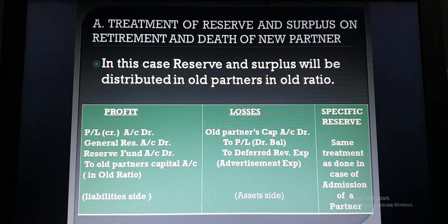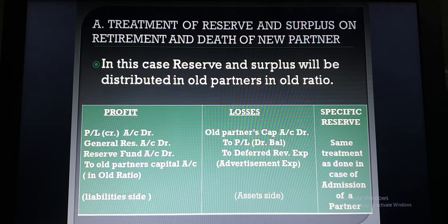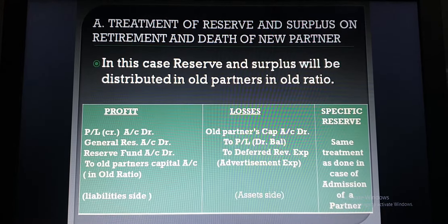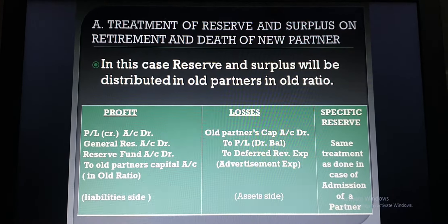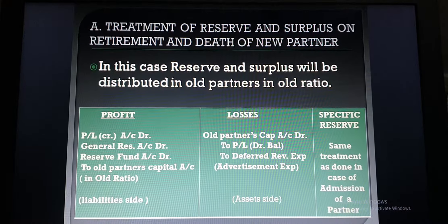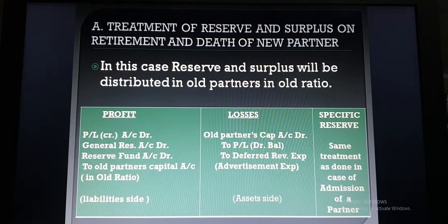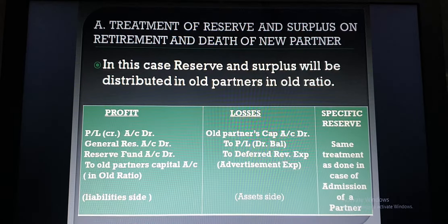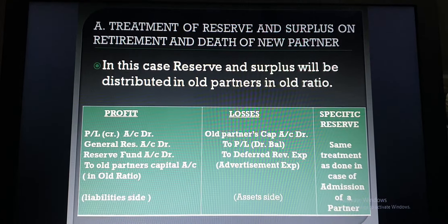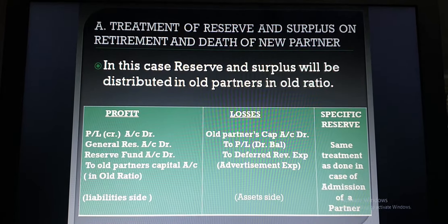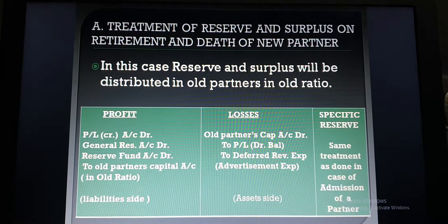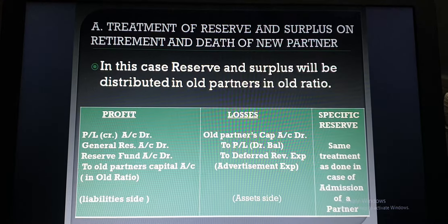All the profit will be distributed among old partners in old ratio, and generally these profits are given on the liability side of the balance sheet. In case of losses, old partners' capital accounts will be debited. There are two types of losses: P&L debit balance and deferred revenue expenditure. An example of deferred revenue expenditure is advertisement expenditure, and these losses are generally given on the asset side of the balance sheet.